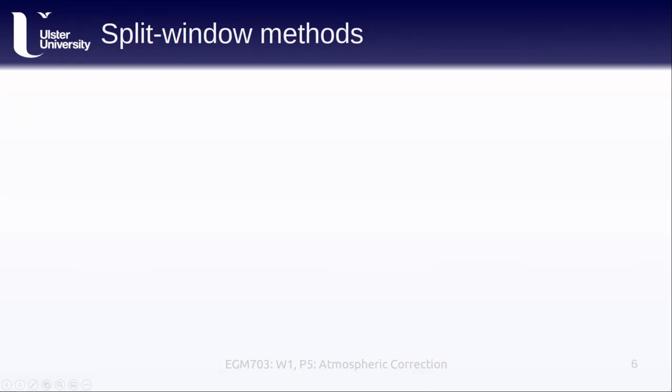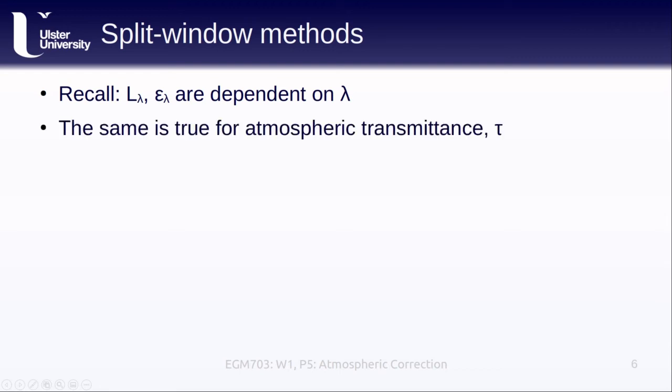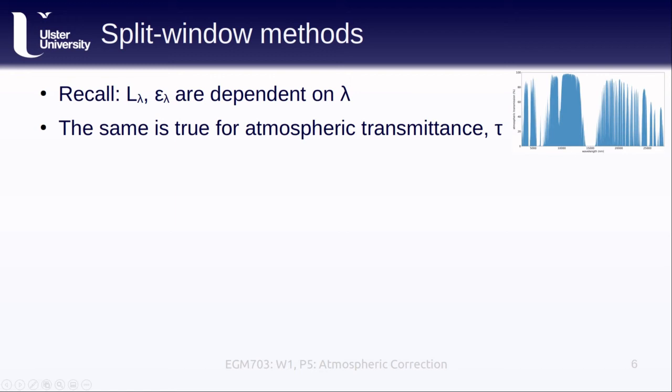The final approach that we'll cover for atmospheric correction is known as a split window method. Now first, let's remember that the spectral radiance and spectral emissivity are both dependent on wavelength. The same is true for the atmospheric transmittance tau. Think back to this figure from the first lesson of the week.